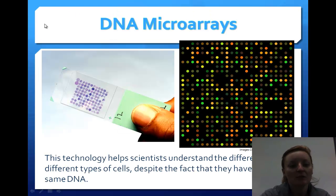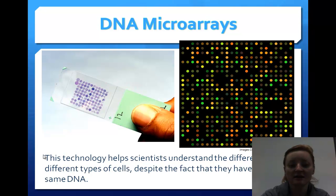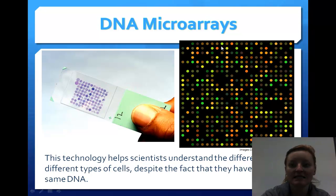Here's a cool piece of technology — pretty artistic if you think about it. It helps scientists understand the differences between different cell types despite having the same DNA. With microarrays, we can look at a particular cell and see what parts of the DNA code are turned on, turned off, or are in transition.